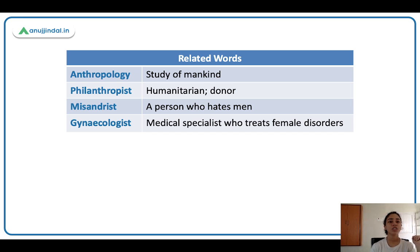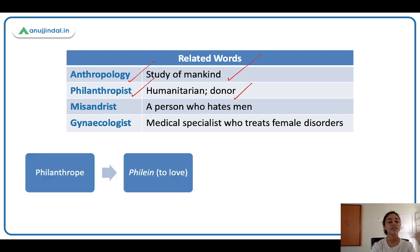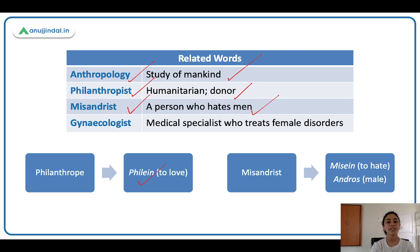Related words: anthropology comes from 'anthropos' (mankind) — it is the study of mankind. A philanthropist is a humanitarian, a donor involved in charity — people like Azim Premji, Ratan Tata, and Bill Gates. Philanthropy comes from 'philin' meaning love — the opposite of 'misan.' So misanthrope and philanthrope are opposites. A misandrist is a person who hates men — 'andros' means male, just as 'gyne' means women. A gynaecologist is a medical specialist who treats female disorders.